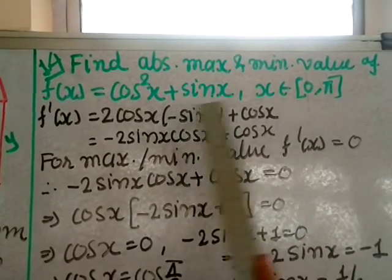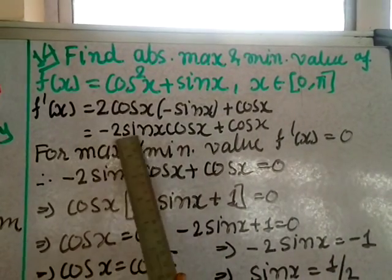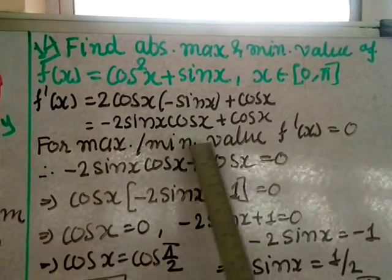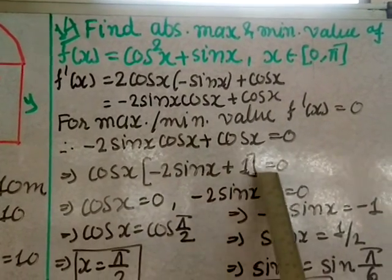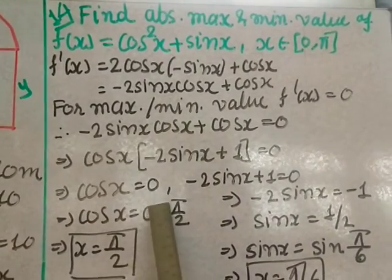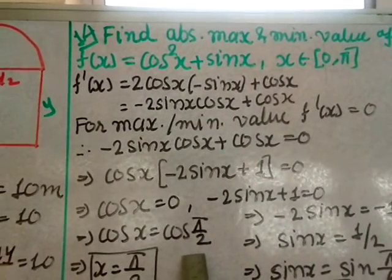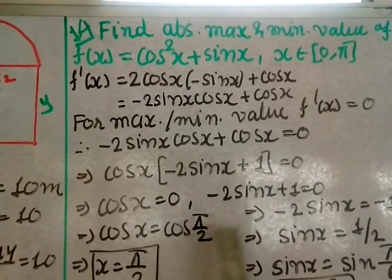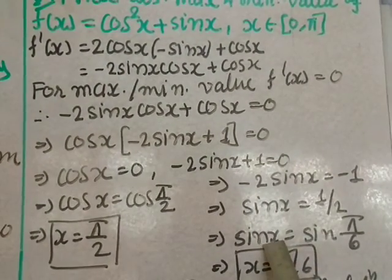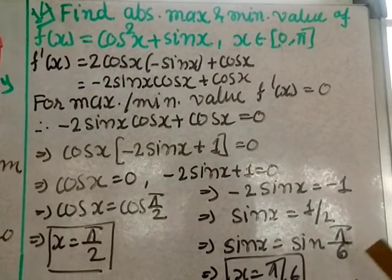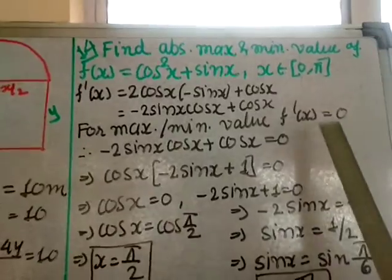Question 14: Find the absolute maximum and minimum value of f(x) = cos²x + sin x, where x ∈ [0, π]. Differentiating: f'(x) = 2cos x·(−sin x) + cos x = −2sin x cos x + cos x = cos x(1 − 2sin x). Setting f'(x) = 0: either cos x = 0, giving x = π/2, or sin x = 1/2, giving x = π/6.